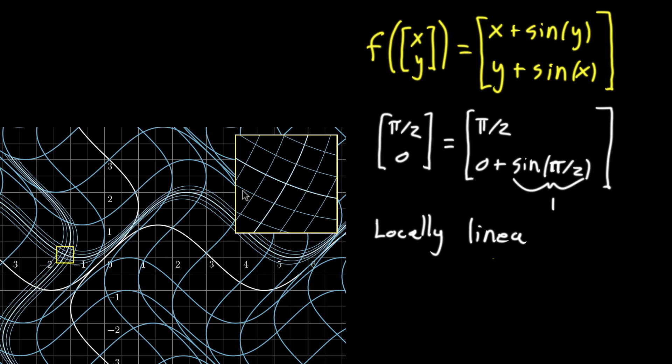And we can see inside this zoomed version it's still not linear. The lines get a little bit curved. But this looks a lot more like a linear function. It looks a lot more like the grid lines that started off horizontal and vertical are remaining parallel and evenly spaced.